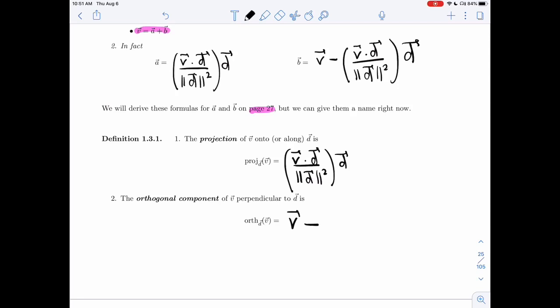And then the orthogonal part will be B. So this formula here. Which often, when we have to compute it, we will actually use the projection that we've already computed and just take V minus the projection.